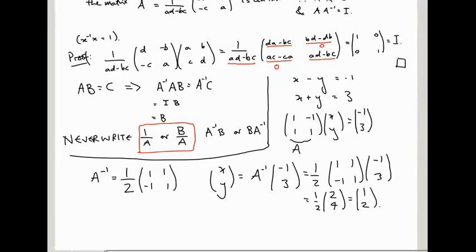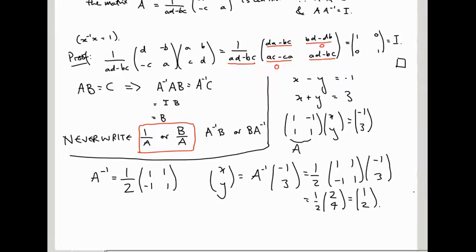So you can use this to solve simultaneous equations. Just multiply the vector of constants by the inverse of the matrix and you're going to get the solution. In other words, AV equals B implies V equals A inverse B.